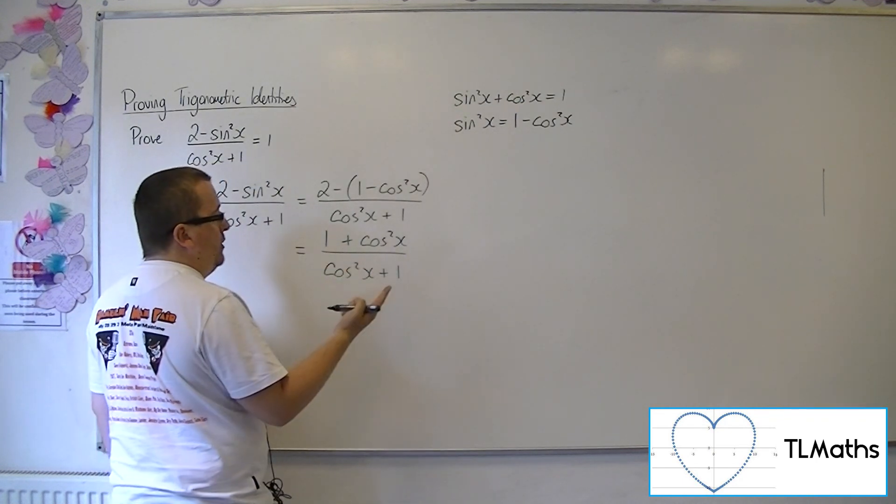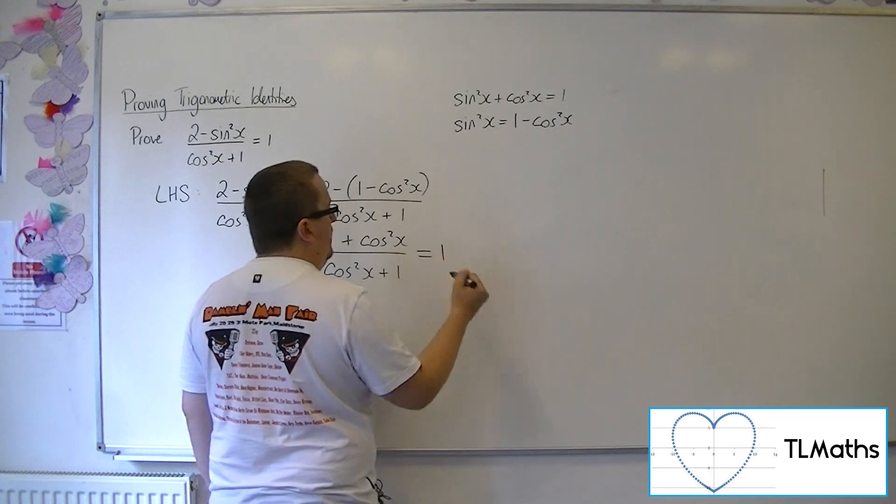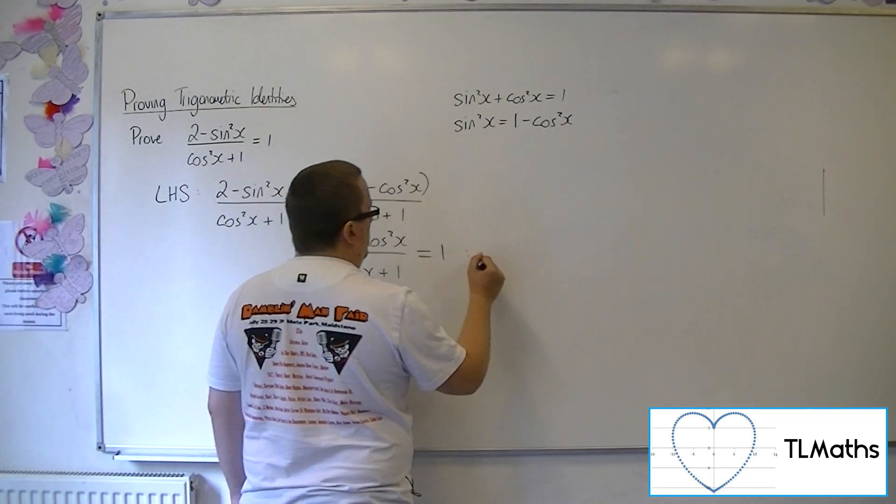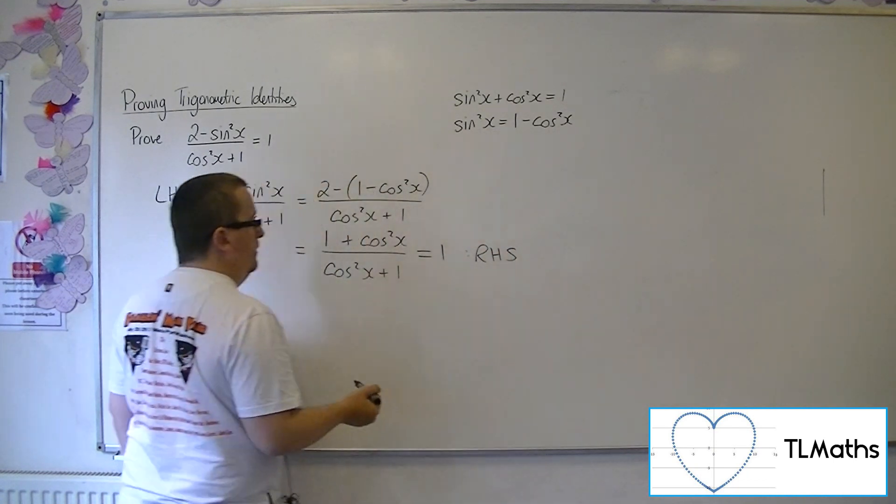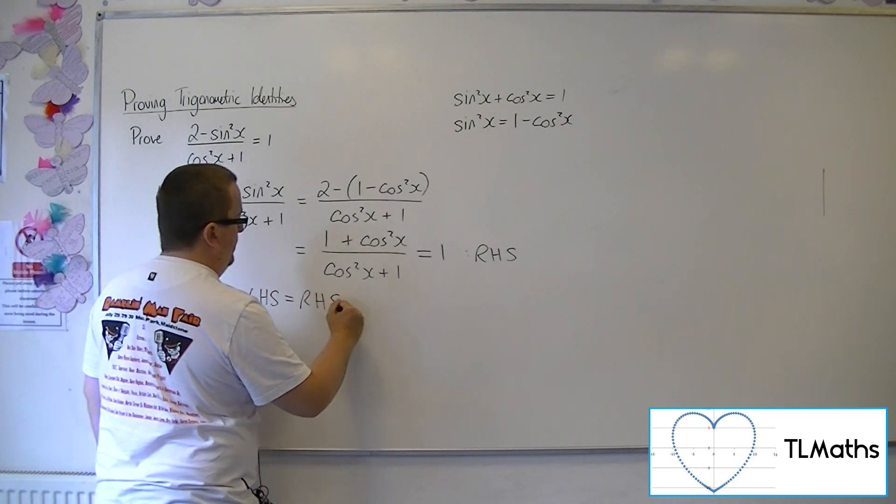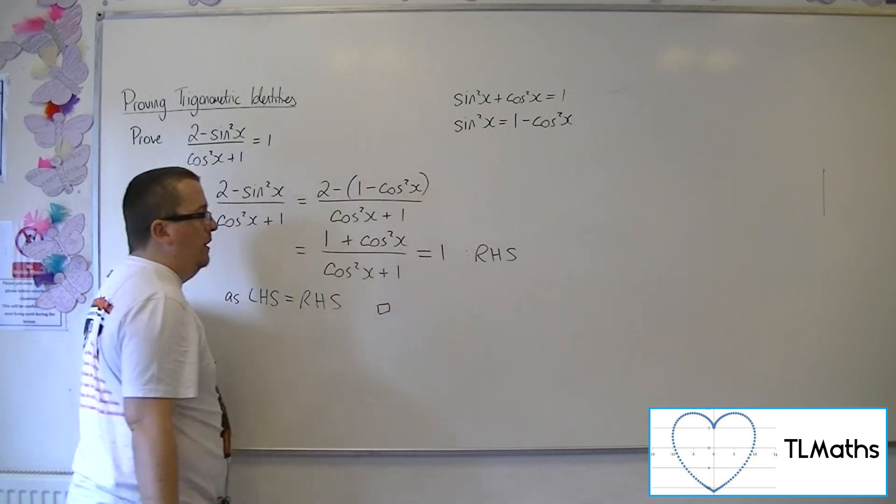1 plus cos squared over cos squared plus 1, while the numerator and denominator are now the same. So that's equal to 1, which is the right-hand side. So as left-hand side is equal to right-hand side, we are done.